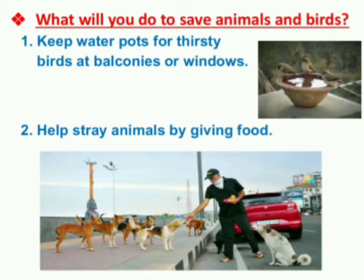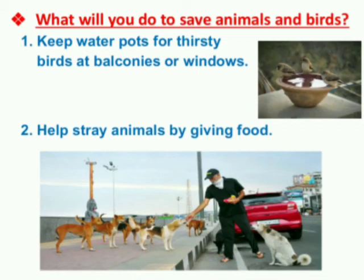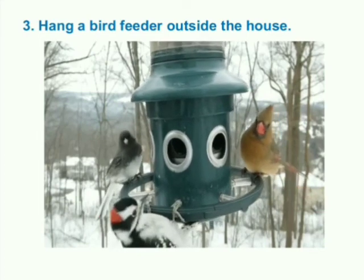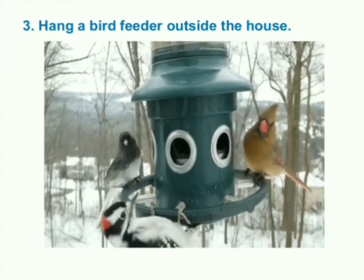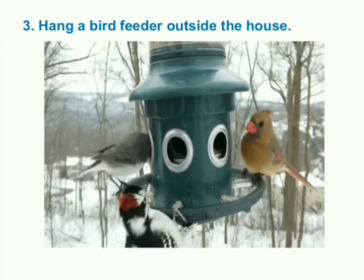Next, what will you do to save animals and birds? Number one, keep water pots for thirsty birds at balconies or windows — many birds die in summer without water because of scorching heat. Number two, help stray animals by giving food; stray animals means animals which do not have homes, so you can feed animals wandering on streets. And this is my favorite — hanging a bird feeder outside the house. It looks so beautiful, isn't it?